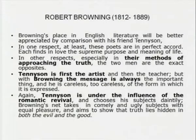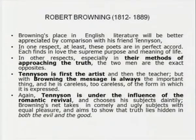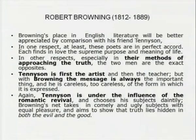We next come to the other great poet of the time, Robert Browning, 1812 to 1889. Browning's place in English literature will be better appreciated by comparison with his friend Tennyson. Browning is as much introspective, obscure, and intellectual as Tennyson is transparent. In one respect at least these poets are in perfect accord — they find in the supreme purpose and meaning of life their chief concern. Tennyson is first the artist and then the teacher, but with Browning, the message is always the important thing and he is careless about the form in which it is expressed.